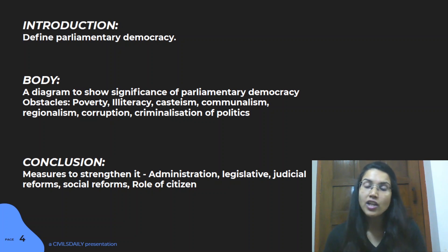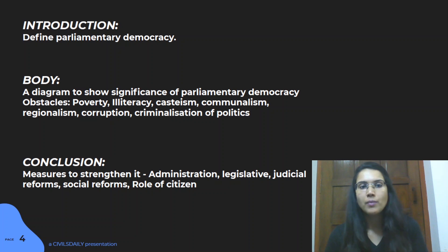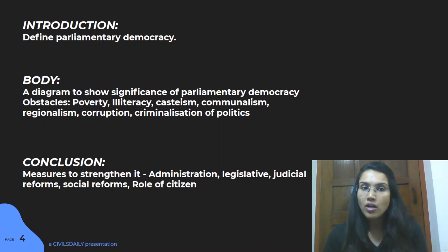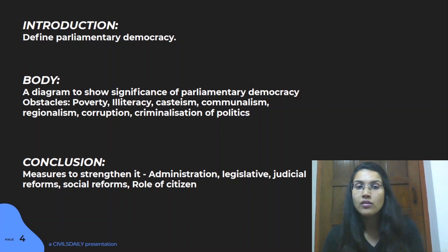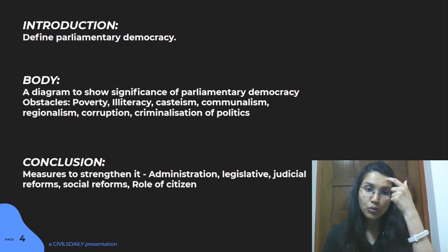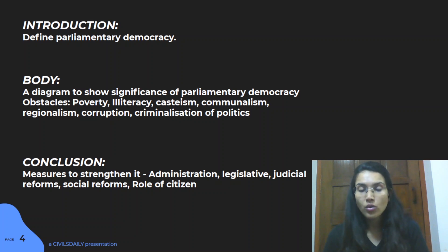Once you've covered that, move to the obstacles with respect to parliamentary democracy in India, divided into subheadings. Talk about poverty — how poor and illiterate people cannot hold the legislature and executive accountable. Cover casteism, communalism, regionalism, corruption, and the criminalization of politics. Include data on how many criminals are in the current Lok Sabha as an example.